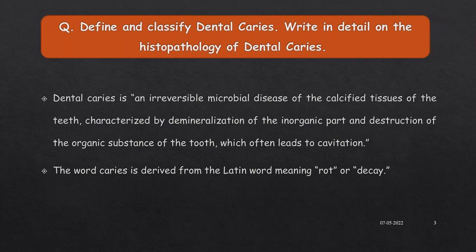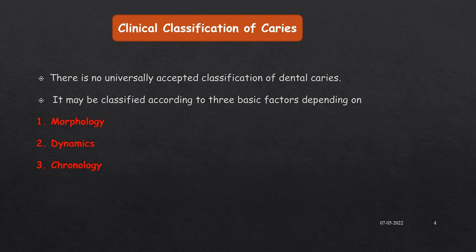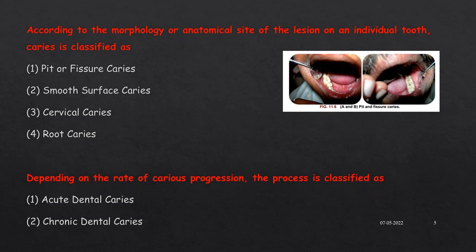The word caries is derived from the Latin word which means rot or decay. Regarding clinical classification of dental caries, there is no universally accepted or standard classification, but it can be classified according to three basic factors: mainly depending on the morphology, the dynamics involved, and the chronology. According to the morphology or anatomical site of the lesion, dental caries is classified as pit and fissure caries, smooth surface caries, cervical caries, and root caries.